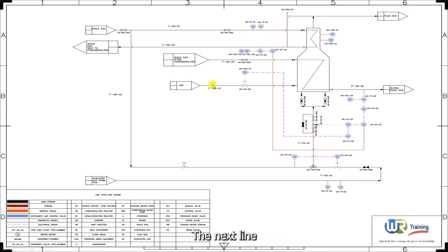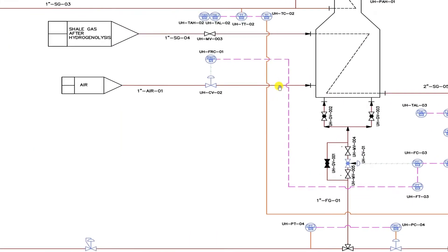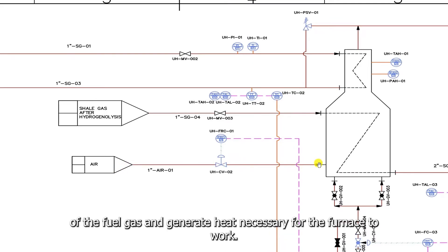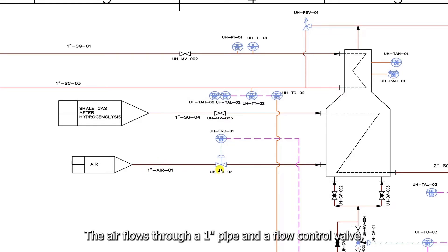The next line, that you can see here, carries process air. Air is admitted to the furnace to ensure the combustion of the fuel gas and generate heat necessary for the furnace to work. The air flows through a one-inch pipe and a flow control valve, tagged CV02. The air is then mixed with fuel gas and burned.